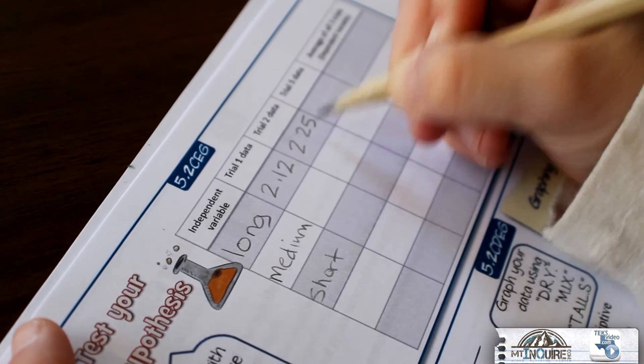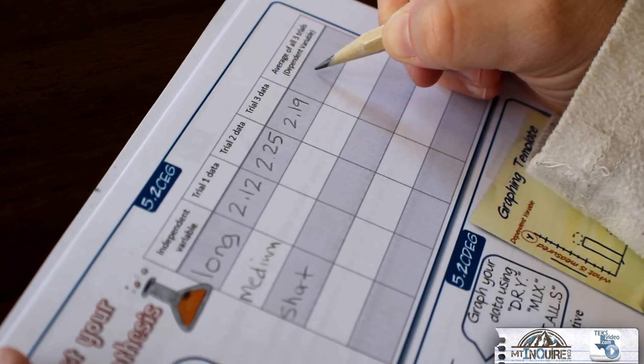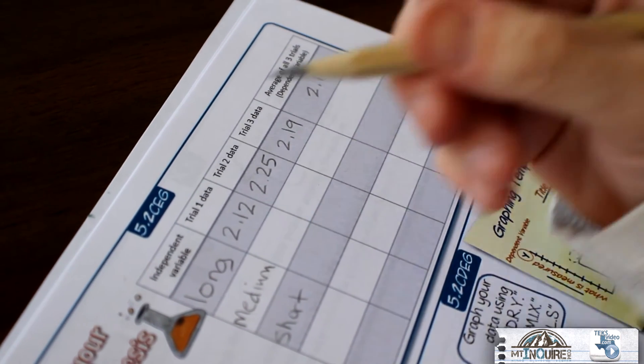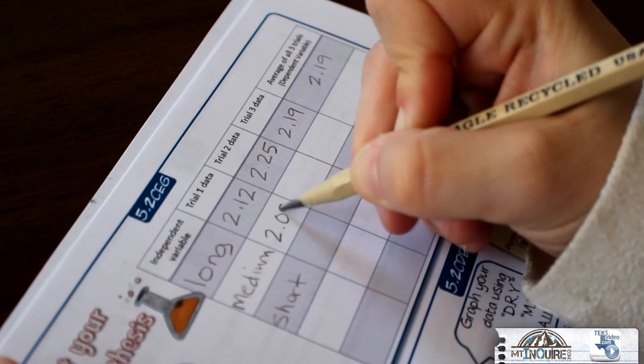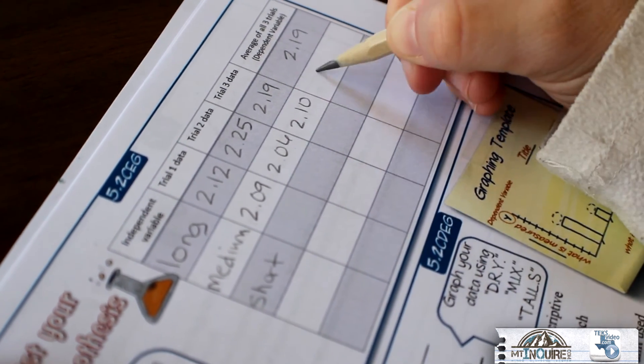We are now ready to collect our data by testing our hypothesis in step 5 of our use of the scientific method. Here we want to fill in the table with the data we are collecting, and we need to remember to perform at least 3 trials in order to gain more accurate information.